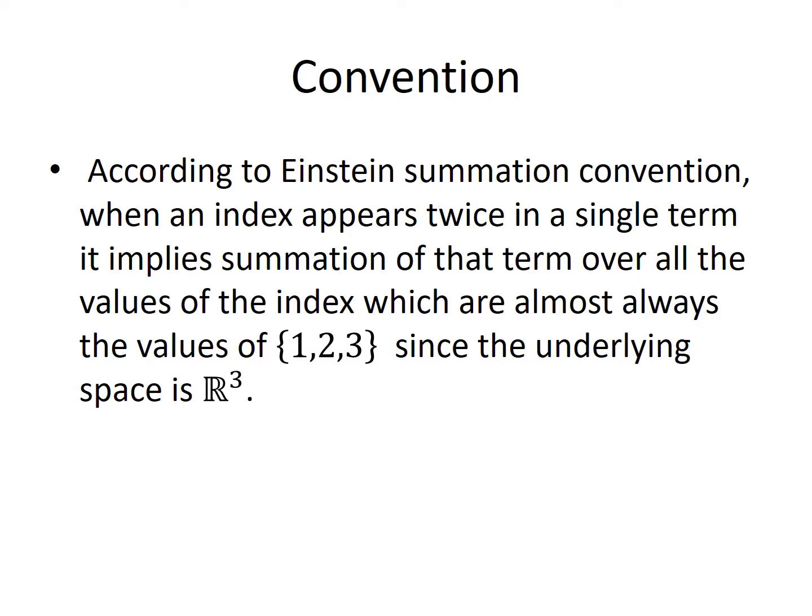In essence, here's what the convention is. According to Einstein's Summation Convention, when an index appears twice in a single term, it implies summation of that term over all the values of the index, which are almost always the values of 1, 2, and 3, since the underlying space is the three-dimensional vector space R³.